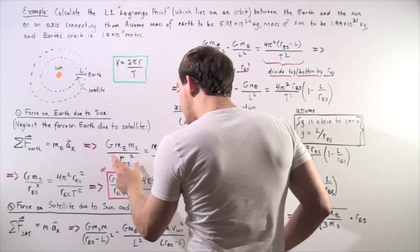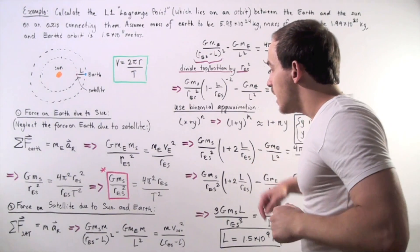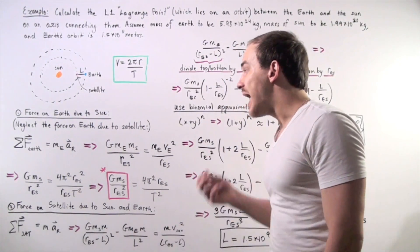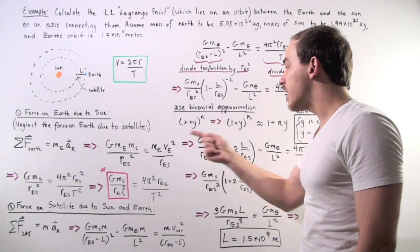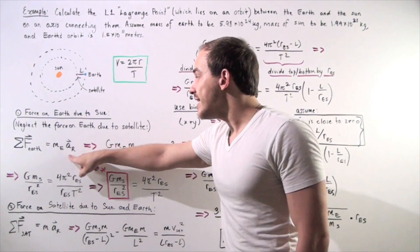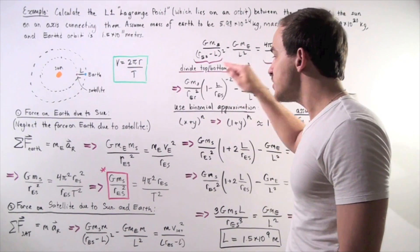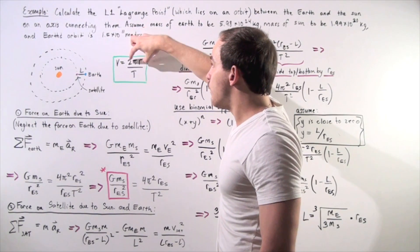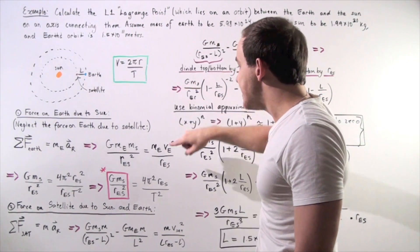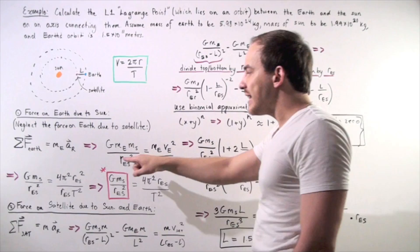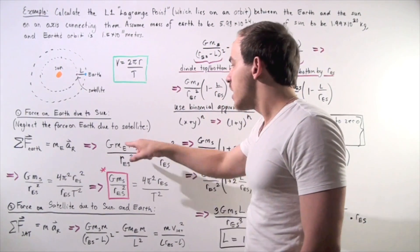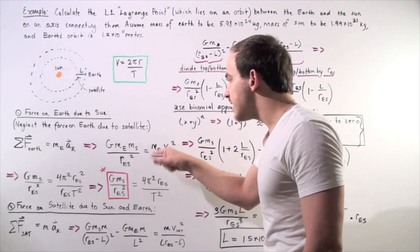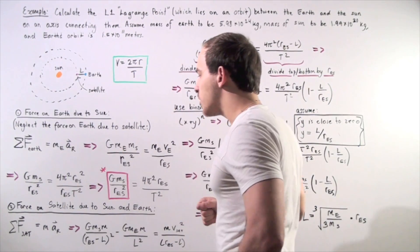This equals the mass of the Earth multiplied by the velocity of the Earth squared divided by the radius of the Earth's orbit, because radial acceleration equals V squared divided by R. We take this formula and substitute it into the velocity term, and we get the following result. Notice the masses of the Earth appear on both sides, so we cross them out.